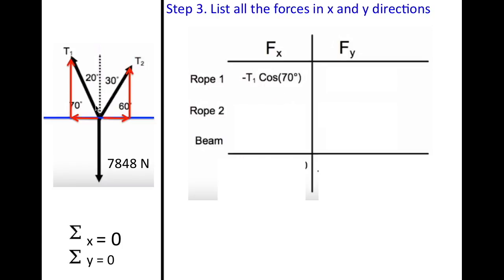And it is negative because it is in the second quadrant. It is going to the left. For your y portion or your y component of your rope one, that is t sub one sine of 70. Over here in your second rope, rope two, you are going to have the sine and the cosine of 60.